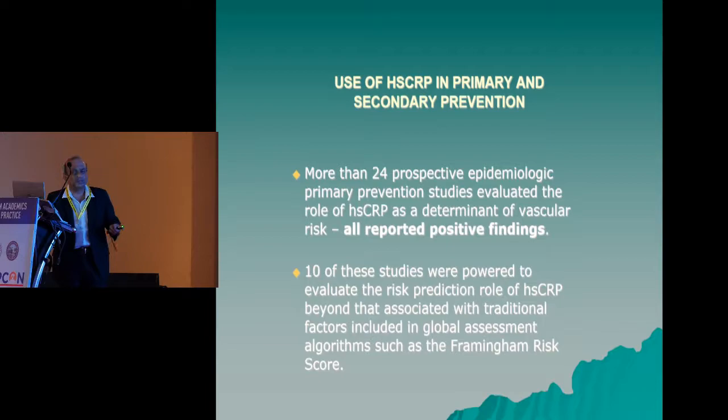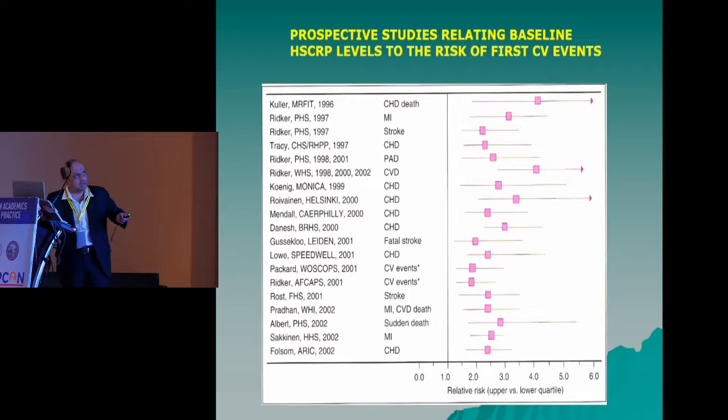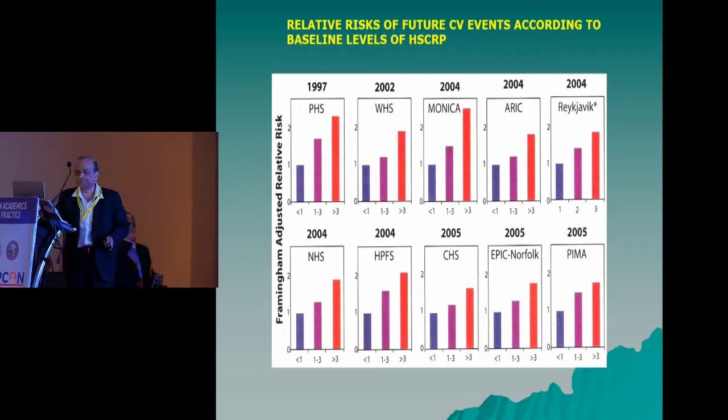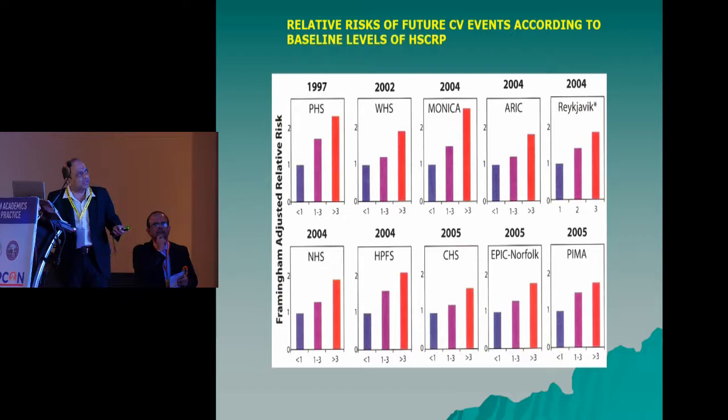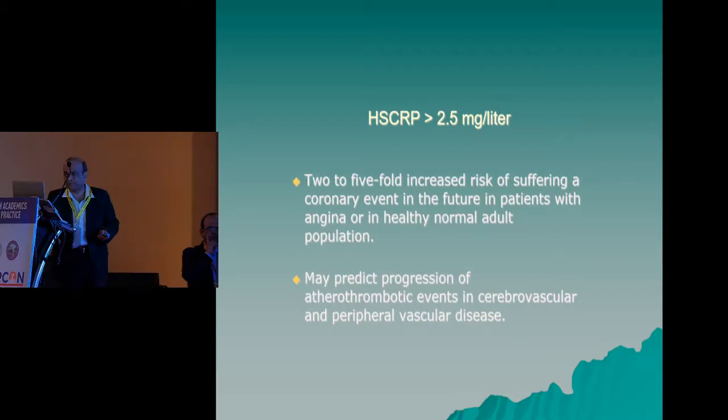More than 24 prospective epidemiological primary prevention studies have shown that HSCRP is useful. From trials spanning 1997 to 2005, HSCRP levels measured from less than 1 to more than 3 mg/L have consistently shown that increasing HSCRP levels predict first coronary vascular events. Increasing HSCRP level consistently correlates with increased vascular events, confirming that HSCRP is quite predictive.